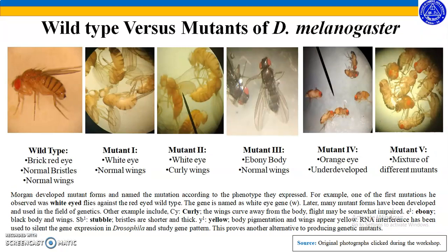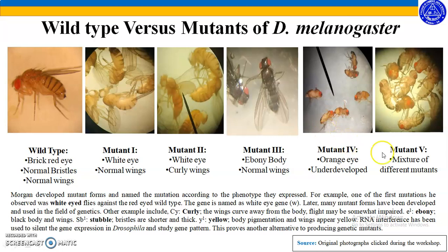These slides represent different types of mutants of Drosophila melanogaster typically seen in laboratories. The first picture shows the wild type, which has brick-red eyes, normal bristles, and normal wings. Mutant one is a white-eyed mutant with normal wings. Mutant two is a white-eyed mutant with curly wings. The third mutant shows an ebony body color — the body is black. Mutant four shows orange eye color and underdeveloped eyes compared to red in wild type. The last picture shows a combination of different eye color mutants. All these pictures are original photographs taken during the workshop.